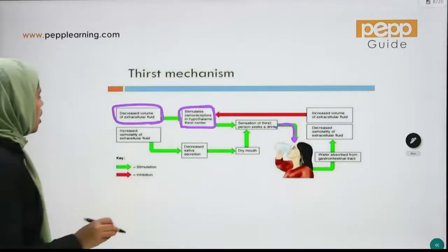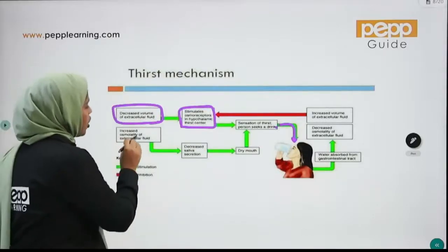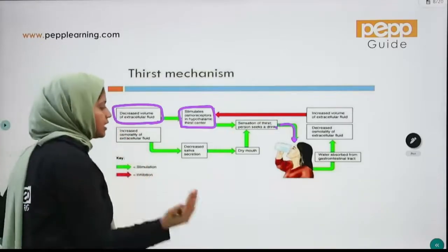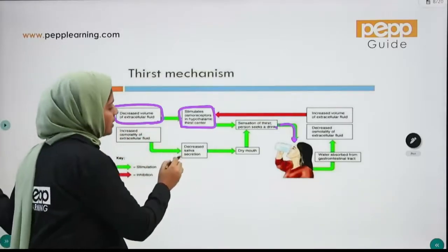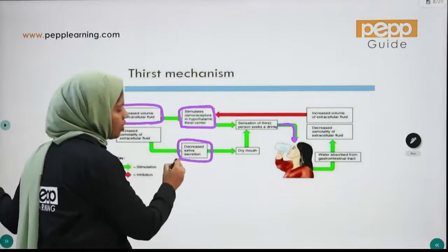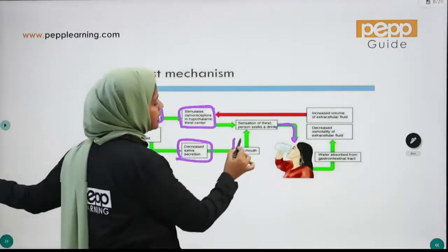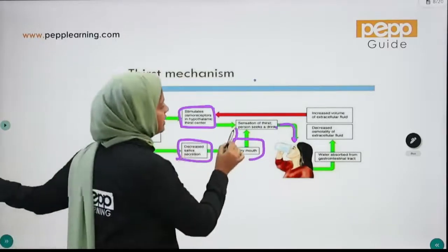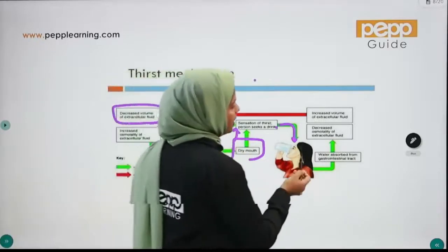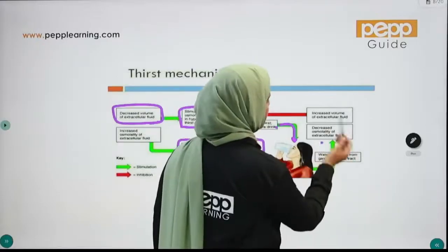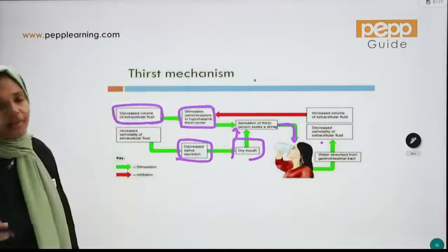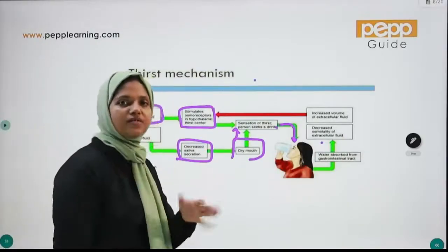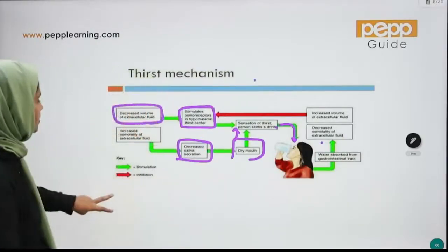Extracellular fluid osmolarity increases — high concentration relative to intracellular fluid — causing water to move out. Saliva secretion decreases, producing dryness. This creates the sensation of thirst. When we absorb water, osmolarity normalizes, the volume of extracellular fluid is restored, and the thirst is satisfied.